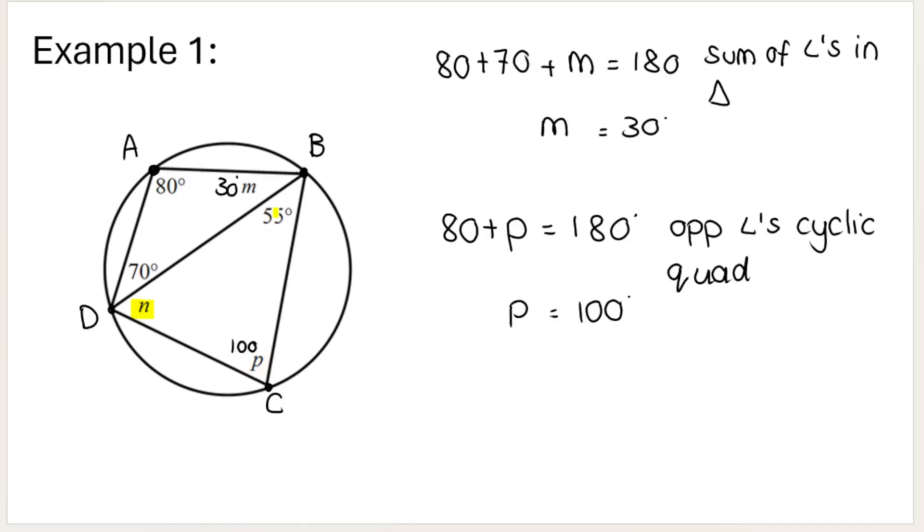And you can use that theorem as well to find N. And you might be thinking, but how do we do that? Well, this angle, angle B, that angle is opposite to angle D. So angle B, which is 30 plus 55, plus angle D, which is equal to 70 plus N. What do they give me? They give me 180 because of opposite angle cyclic quad. So N is equal to 25 degrees.